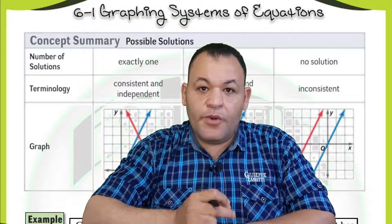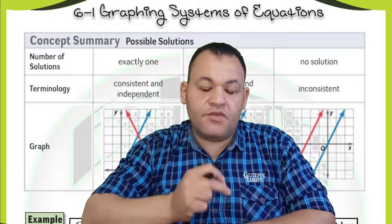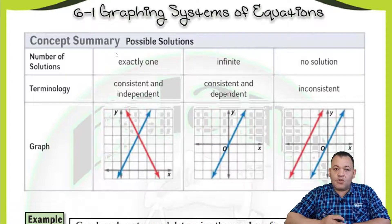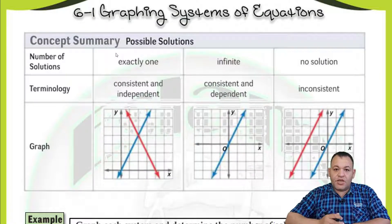Solving the system of equations by graphing means finding the point of intersection of the graphs. So suppose that we are talking about graphing a system of linear equations. A linear equation is an equation of the first degree which is represented graphically by a straight line.